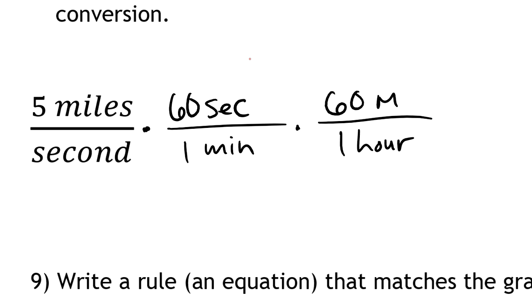I'm strategically picking these number 1s so that I end up getting seconds over seconds, and then I end up having minutes over minutes. Probably I should write this as 'min'.